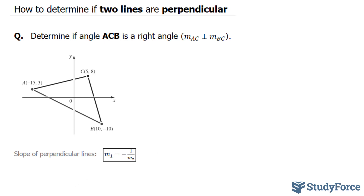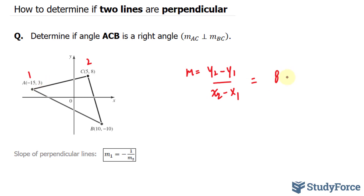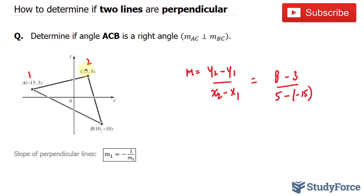Let's start with finding the slope for AC. The slope formula is m equals y2 minus y1 over x2 minus x1. I'm going to call this point 1 and point 2. Therefore, this is my y2: 8, and this right here is my y1. This is my x2, and this is my x1, minus negative 15. Now I chose these arbitrarily — I could have easily chosen this as my second point and this as my first point, and I would still end up with the same slope.